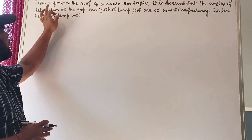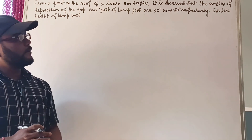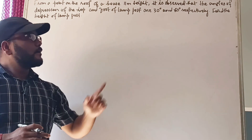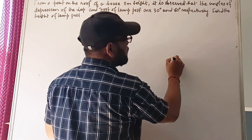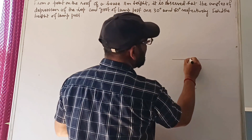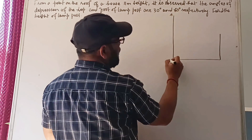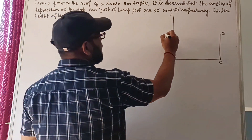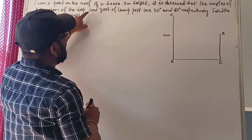Next question: from a point on the roof of a house 11 meters in height, it is observed that the angle of elevation of the top and the angle of depression of the foot of a lamp post are 30 degrees and 60 degrees respectively. Find the height of the lamp post. Draw the ground, the house AB, and the lamp post CD.